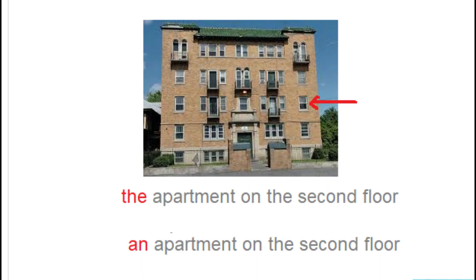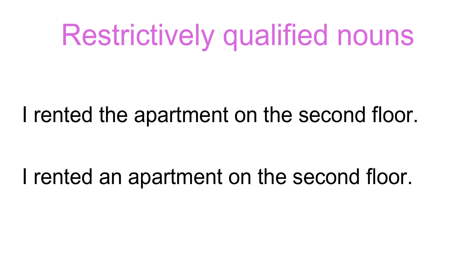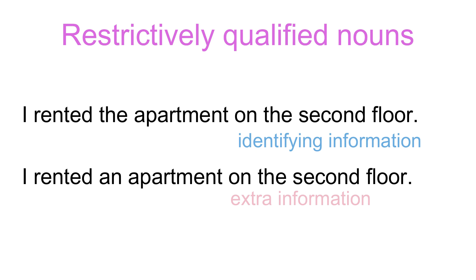However, this does not mean that 'the' is used whenever a noun is modified. The reason is that the modifying phrase or clause may not provide identifying information, but only extra information. Compare: 'I rented the apartment on the second floor' versus 'I rented an apartment on the second floor.' In the first sentence, with 'the apartment,' the listener knows which apartment — 'on the second floor' serves as an identifier, possibly because they went apartment hunting and there was only one apartment on the second floor. In the second sentence, the listener has no idea about the apartment other than the fact that it is on the second floor — here, 'on the second floor' serves as extra information.